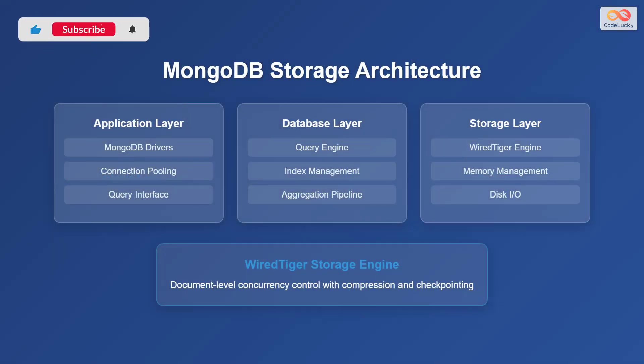Now let's discuss MongoDB's storage architecture, which is organized into three main layers. The application layer includes MongoDB drivers, connection pooling, and a query interface, which provides the tools for applications to interact with the database.